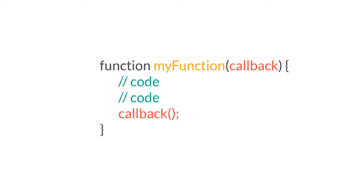Callback functions are functions that are executed after a certain function is done executing. In JavaScript, you can treat functions as objects, so just as you can pass an object as an argument to a function, you can pass functions as arguments of another function. That's the way we use callback functions.